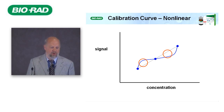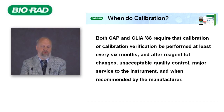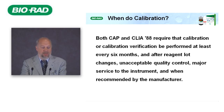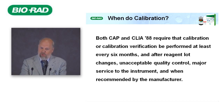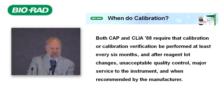Both CAP and CLIA require that calibration or calibration verification be performed at least every six months, and after reagent lot changes. Most laboratories are not doing this after lot changes. Unacceptable quality control does not mean simply having a value outside your limits — you have to find a reason before doing a calibration. These days people look at the QC result and then calibrate, effectively calibrating the error away and forgetting it. Major service of the instrument also requires calibration, and whenever recommended by the manufacturer.